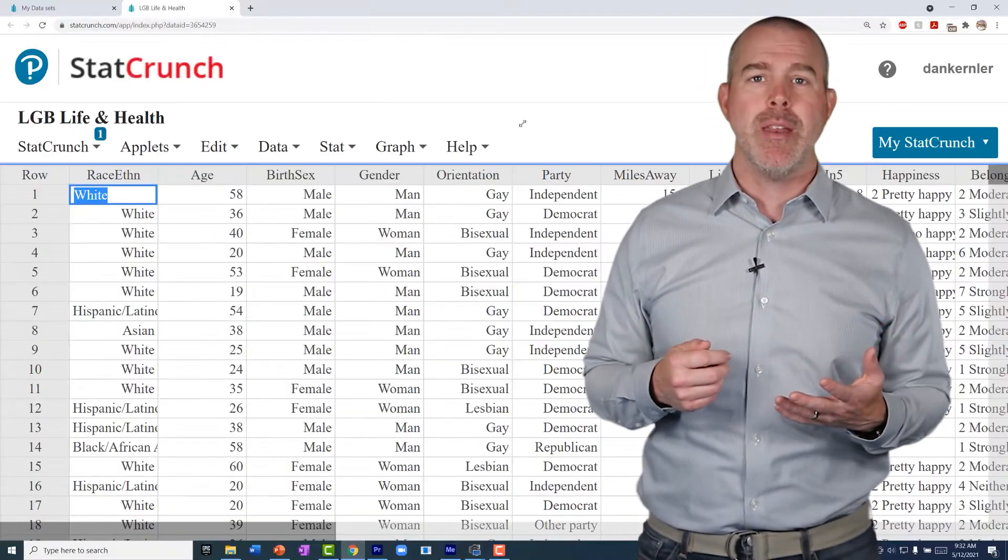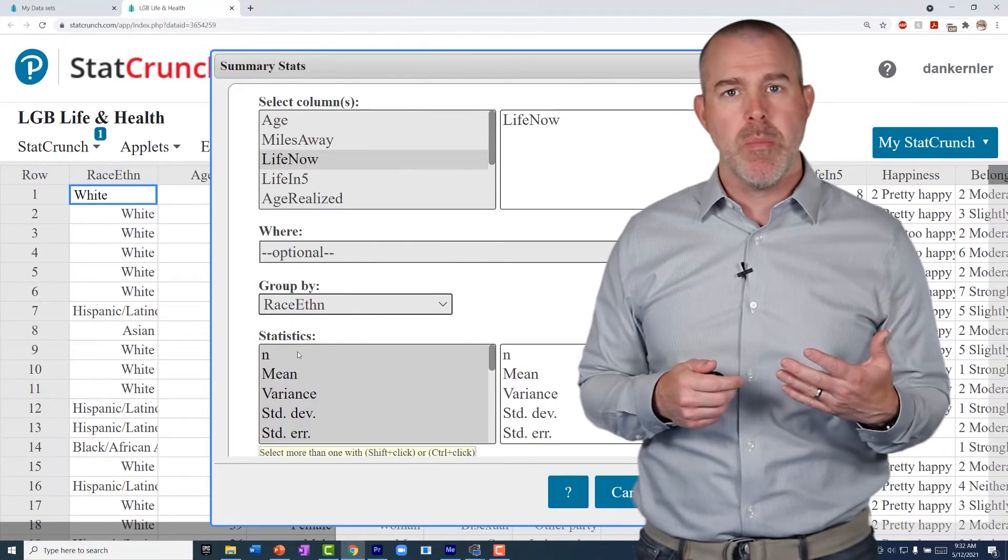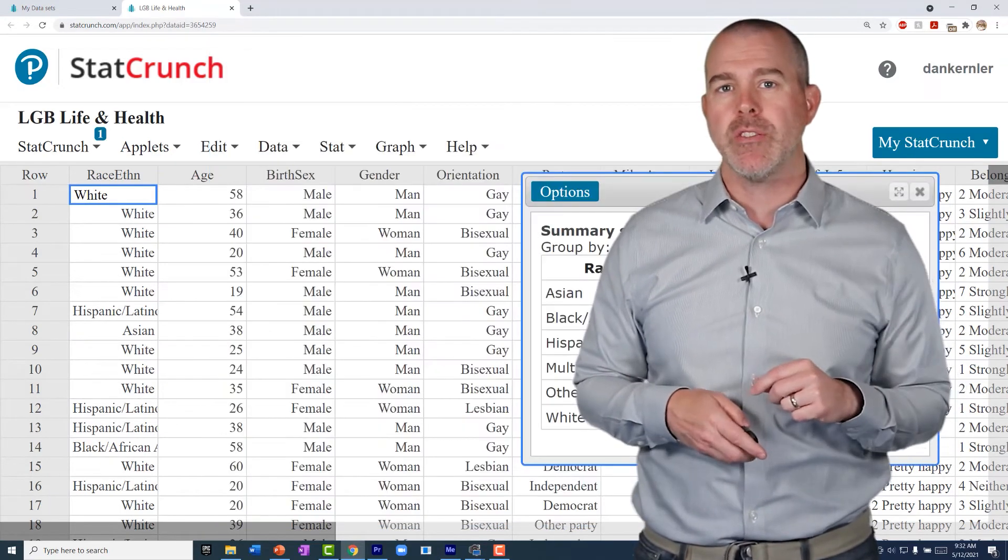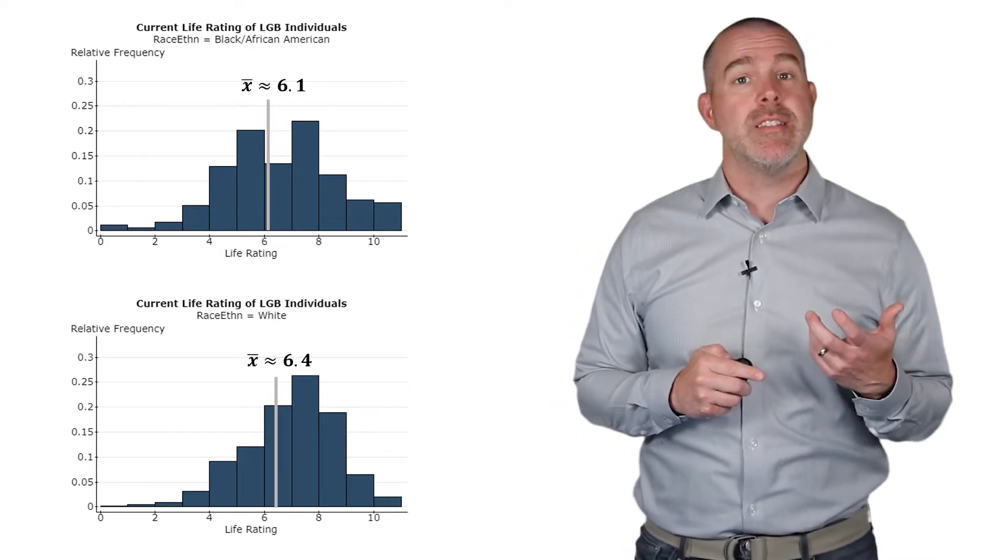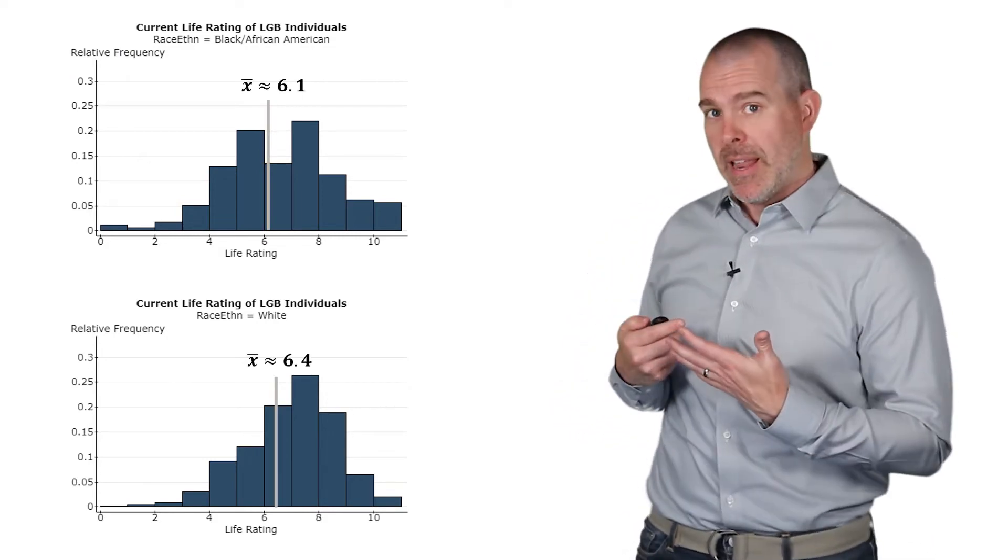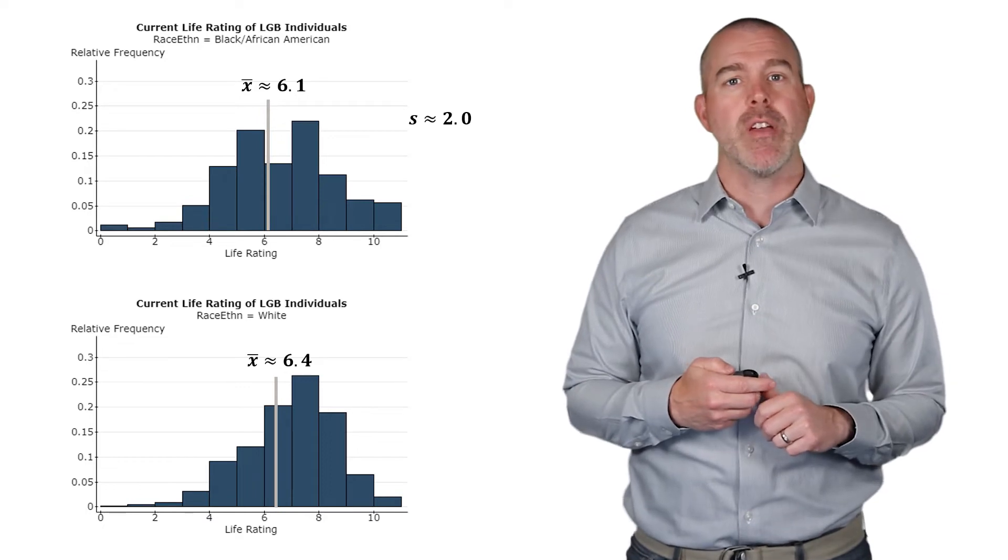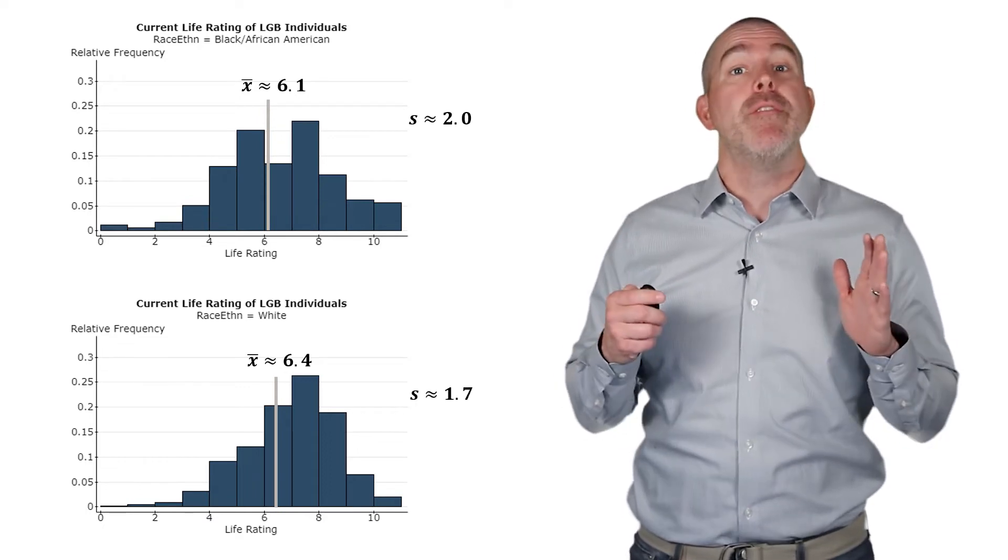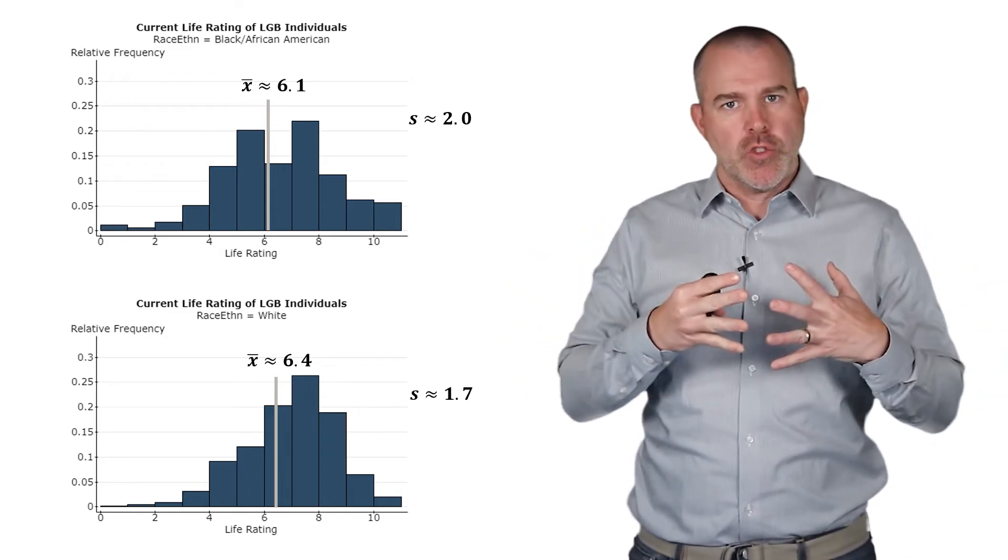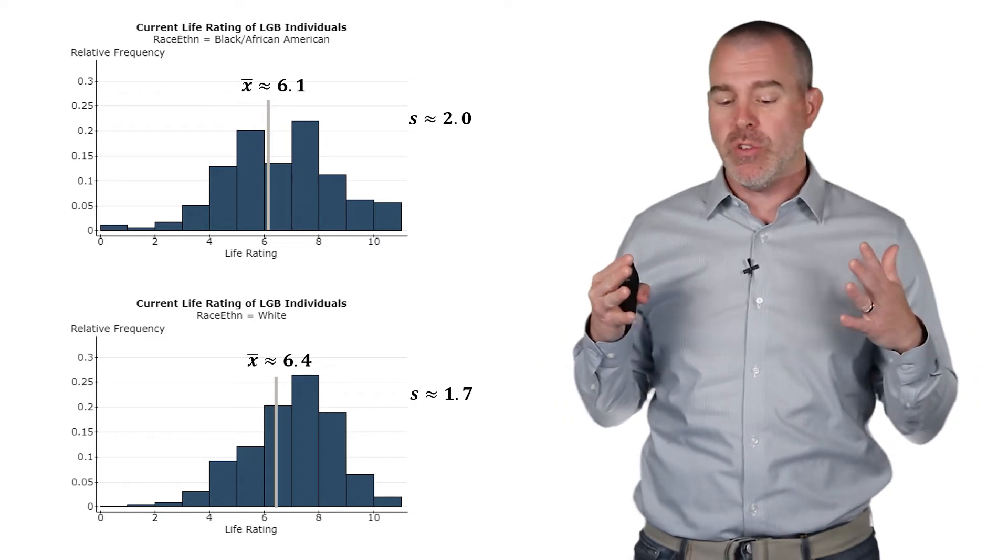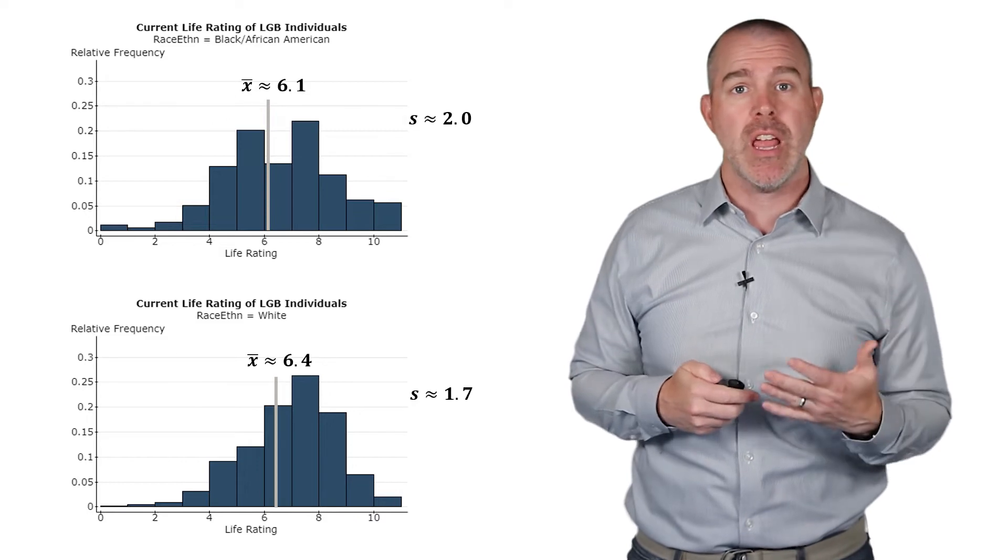So let's look in StatCrunch and calculate the mean and standard deviation of these. So this is just like we were doing the mean and median. It's going to go stat, summary stats, and then columns. And you pick your variable, in this case life now. And we're going to group by race or ethnicity. And what we find is for black or African-Americans, the mean is 6.1. For whites, it's 6.4. So you can see that on the histogram. It looks a little bit higher. And then the spreads are different as well. The standard deviation for black or African-Americans is 2.0. And for white, it's a little bit smaller. It's 1.7. So again, the standard deviation is talking about how spread out that histogram is. It's not a huge difference here, but the white histogram is a little bit narrower. So it gives it a smaller standard deviation.